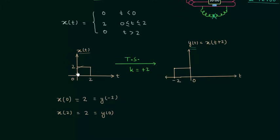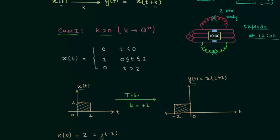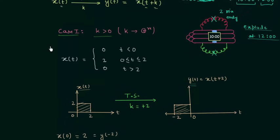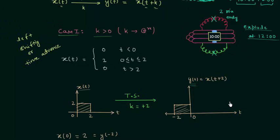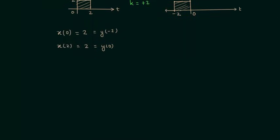You can clearly see the whole waveform is shifted to the left by 2 seconds. So case number 1, in which k is greater than 0, is the case of left shifting, or we can say time advance. This case is important because it creates a little bit of confusion. You can see we are adding 2 seconds to the time, so it generally feels like the signal will move forward or be delayed, but in reality the signal will be advanced depending on the value of k.